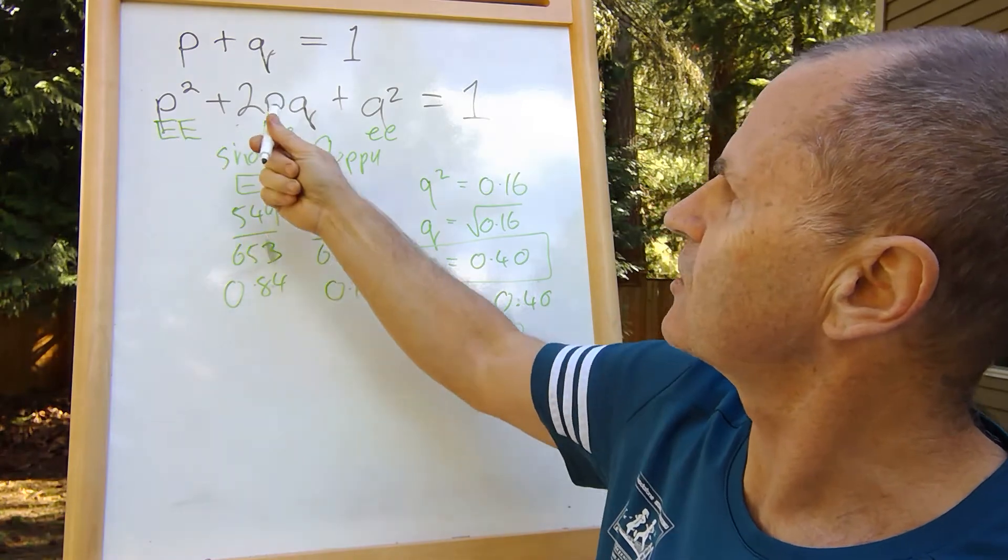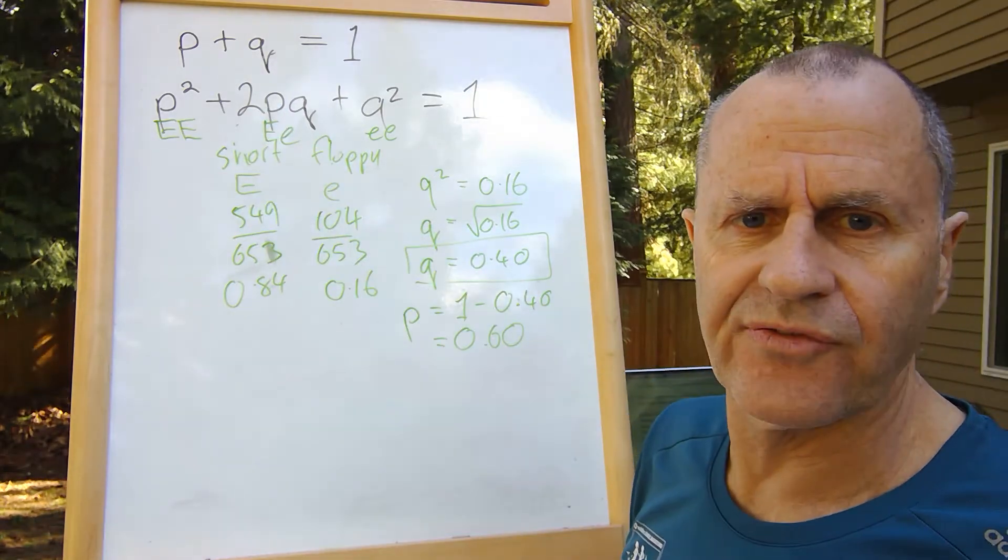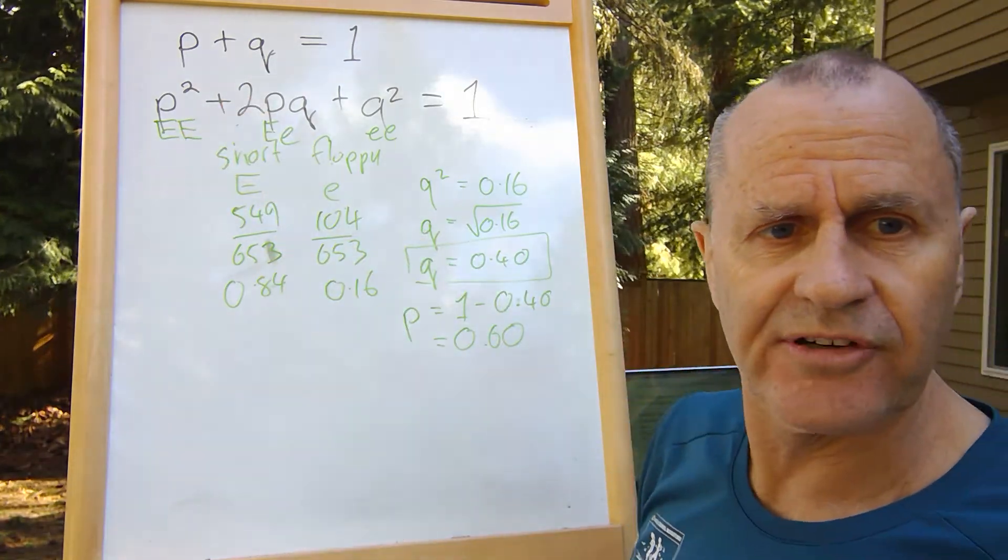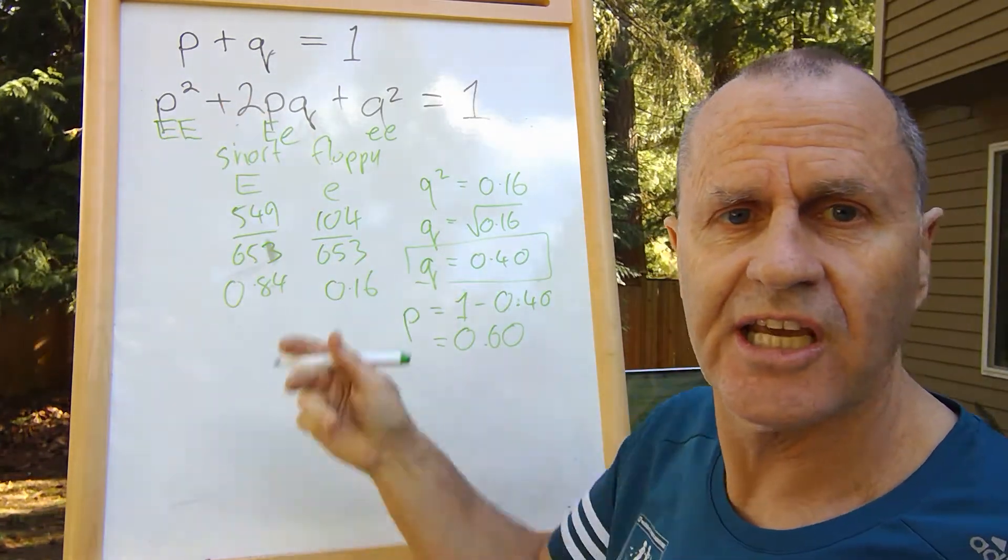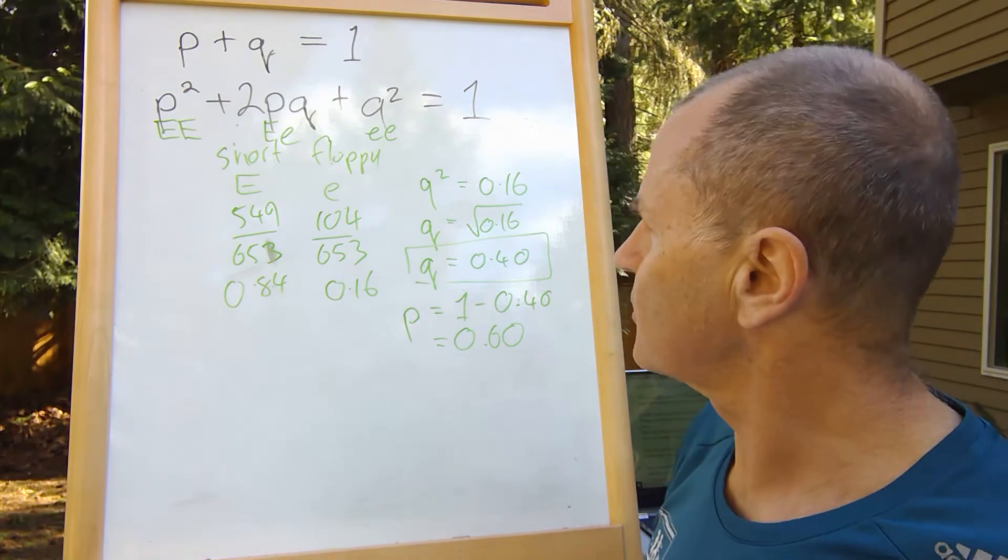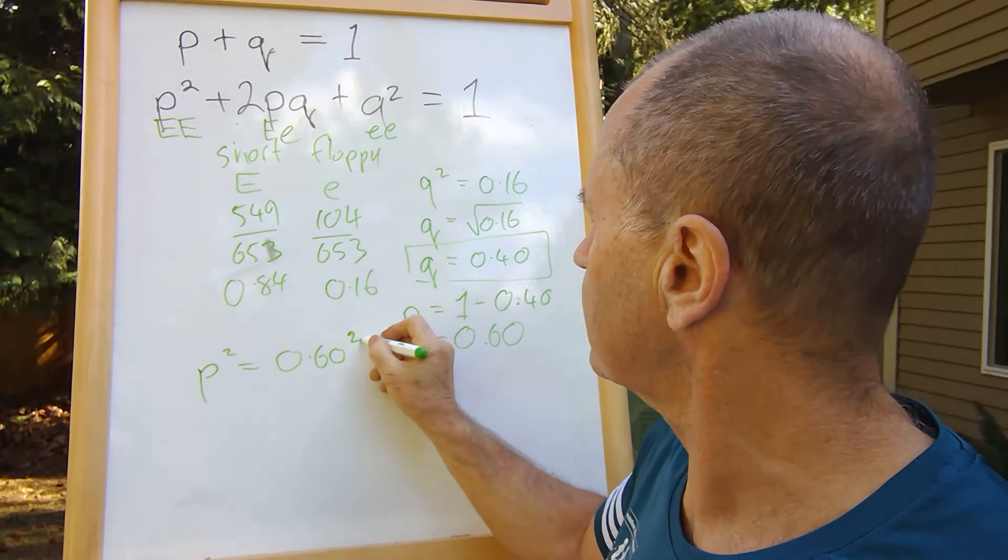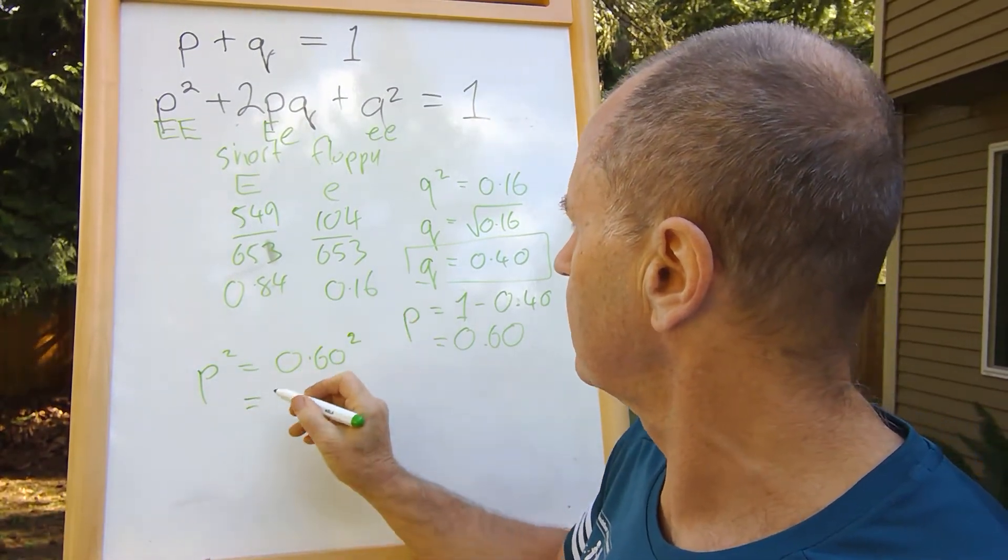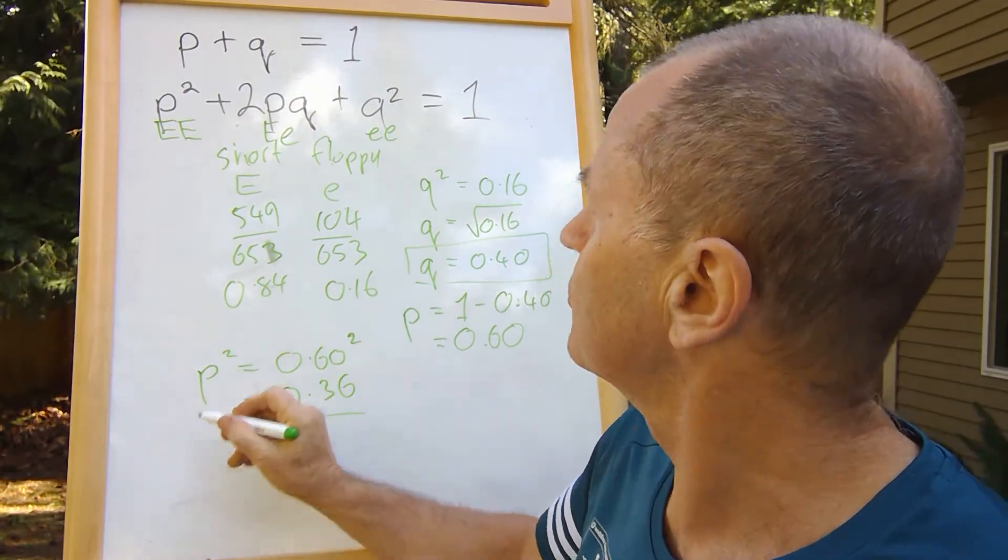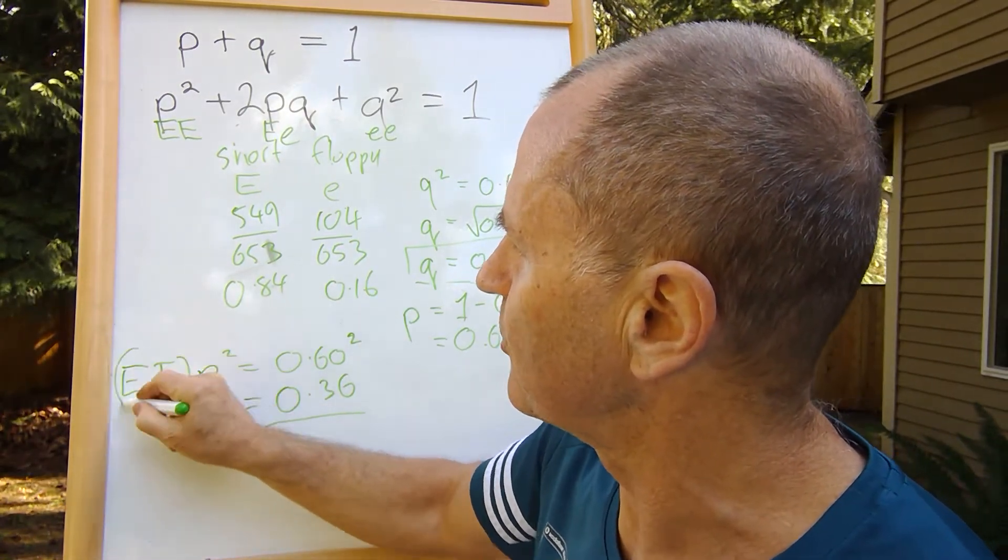So the frequency of p is 0.60, the frequency of q is 0.40. Now to work out the frequency of homozygous dominant and heterozygous individuals, we just plug these values into the formula. We already know q² was 0.16. Now we work out p²: p² equals 0.60 squared, which is 0.36. That's the frequency of capital E capital E, the homozygous dominant.